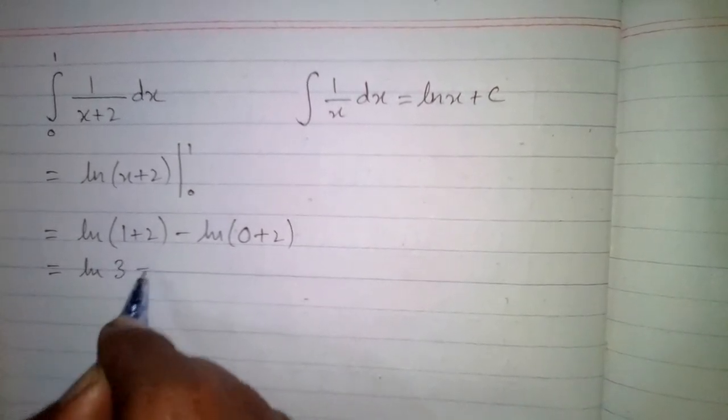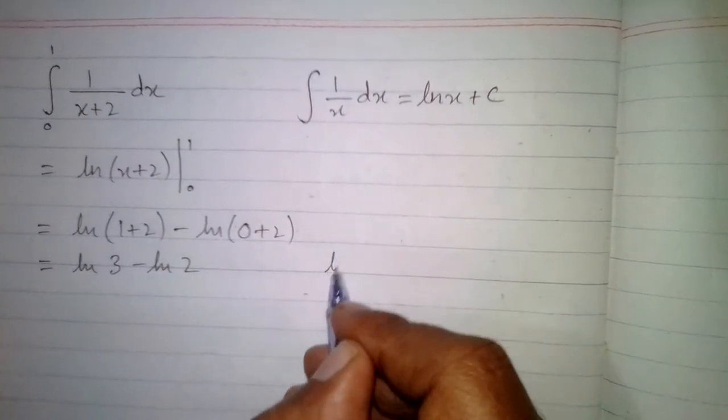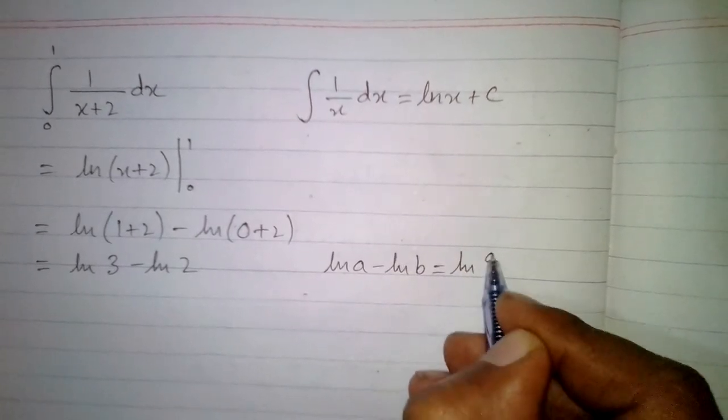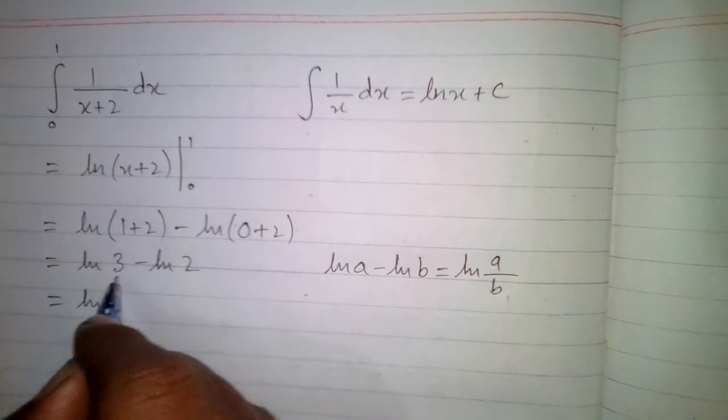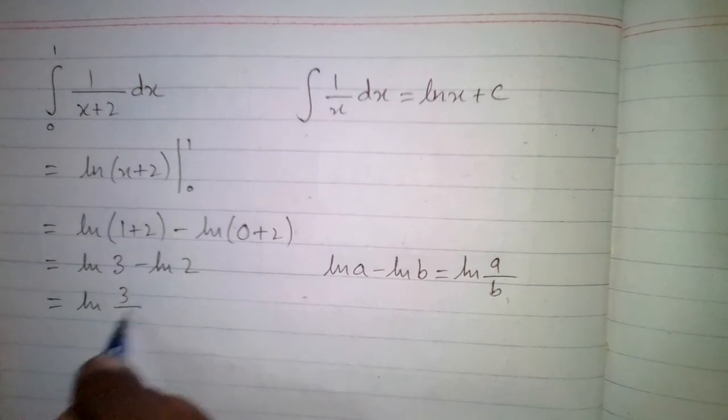ln of 3 minus ln of 2. Now we know that ln of a minus ln of b is equal to ln of a upon b. So this ln of 3 minus ln of 2 is equal to ln of 3 upon 2.